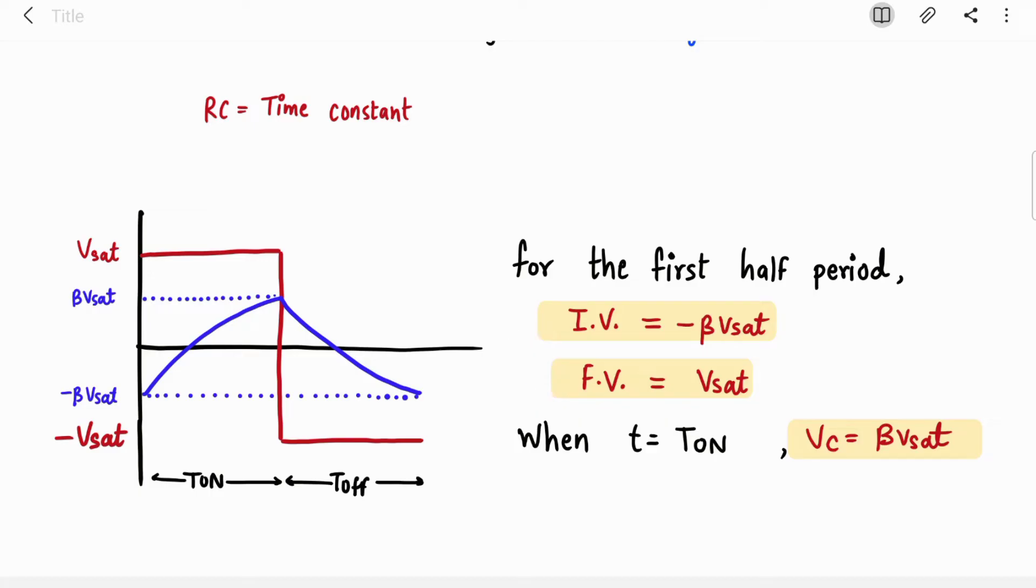Let's find out the values of initial voltage and final voltage. The capacitor voltage is bouncing between minus beta Vsat and beta Vsat, so the initial voltage is minus beta Vsat. Now for the T on period, the final voltage is not beta Vsat. Final voltage is the maximum voltage which was available to charge towards for the capacitor. Maximum plus Vsat was available, but it could not charge towards plus Vsat.